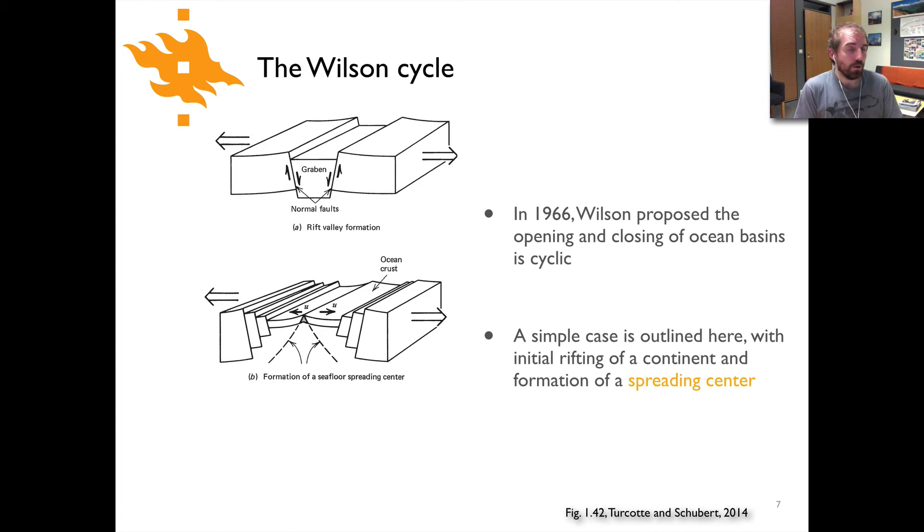Okay, so now we've seen the three different plate margin types, and now we can talk about the Wilson cycle. This is the idea put forth in 1966 by Wilson that the opening and closing of ocean basins is something of a cycle—they open, they close, they open, they close—and it happens repeatedly throughout time. We're going to just take a quick look at a cartoon view from another figure from the Turcotte and Schubert textbook. In the top panel in A, we can see early onset of rifting. We've got a graben that's dropping down as a continent is being pulled apart, and you can see the vectors pulling the continent apart there.